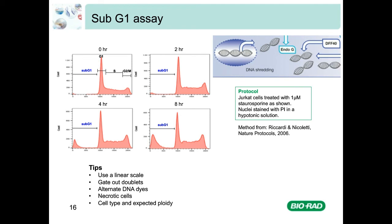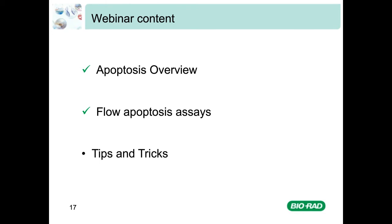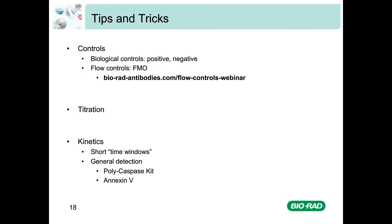Moving on to the last section: general tips and tricks for accurately measuring apoptosis using flow cytometry. First, include controls. Biological controls include a positive and negative control so you can be sure the assay is working as expected. In the assays shown today, the vehicle DMSO was used as a negative control, which is important as DMSO is known to induce apoptosis. You also need flow-specific controls such as FMO controls in large staining panels to help set gates. More information can be found in our controls webinar, available on demand.